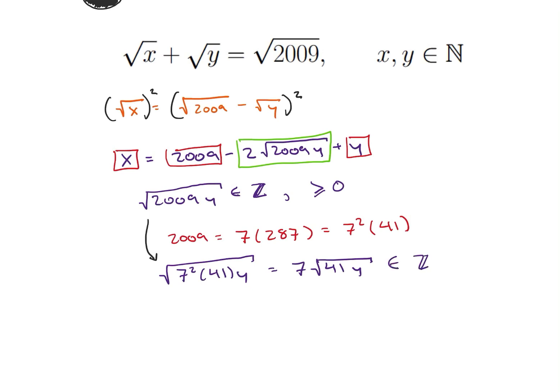We also know by symmetry, because we could have done the exact same thing by moving x to the other side, so we know that 7 square root of 41x is also an element of the integers.